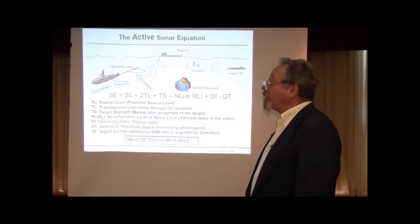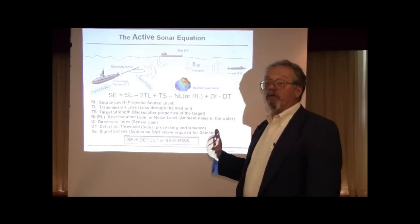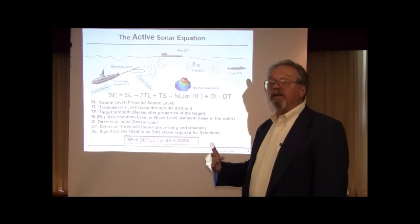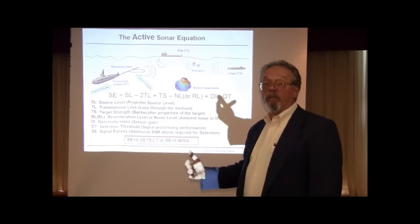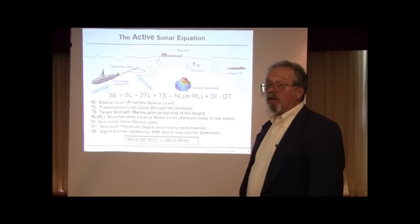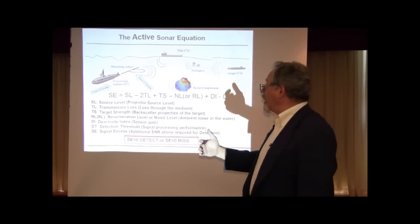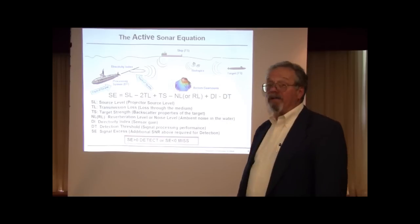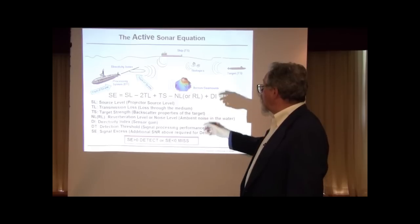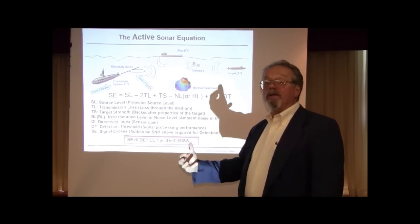And normally you want to calculate the signal excess, which is how much signal-to-noise ratio you have relative to what's required to perform a certain test. So the signal excess is the source level, minus the transmission loss out and back, or 2TL from monostatic sonar, plus the target strength, which is a measure of how well the target reflects energy.